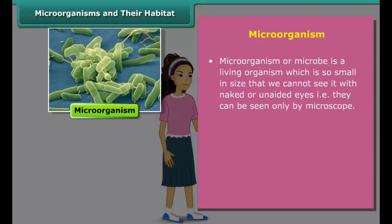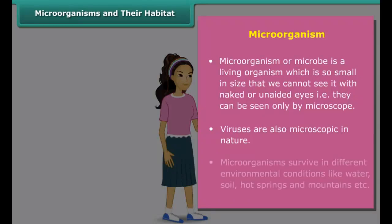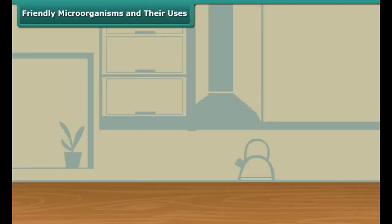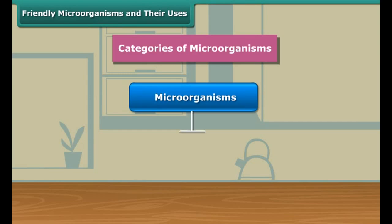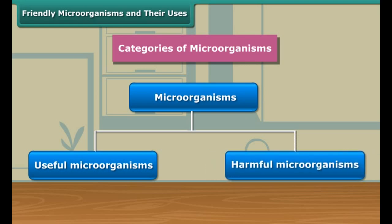A microorganism or microbe is so small in size that we cannot see it with naked or unaided eyes. They are broadly classified into four major groups: bacteria, fungi, protozoa, and algae. Viruses are also microscopic. Microorganisms can survive in different environmental conditions. These microorganisms are broadly categorized into useful microorganisms and harmful microorganisms.